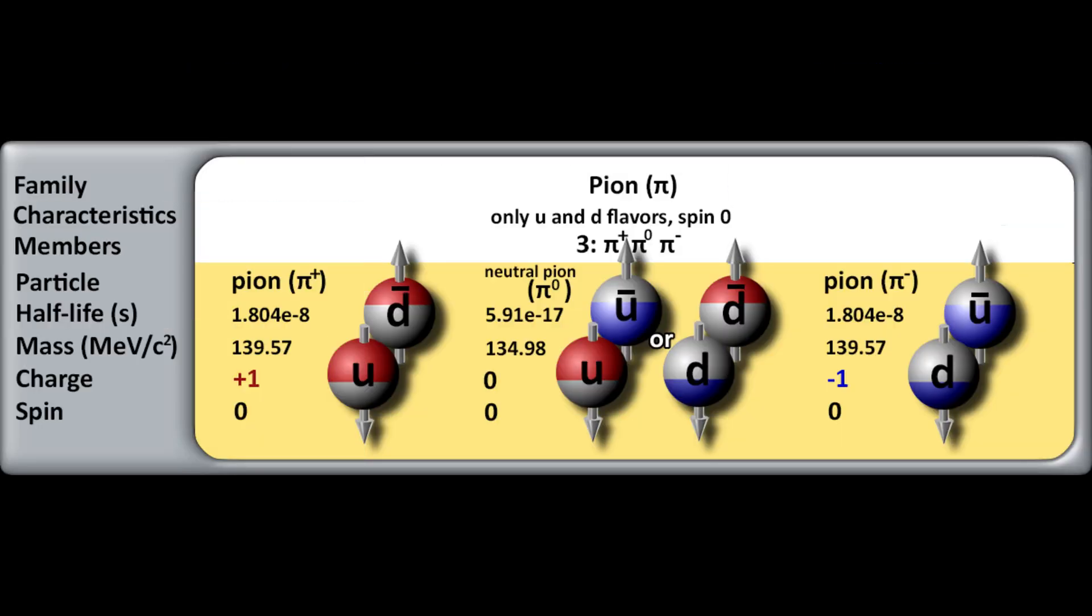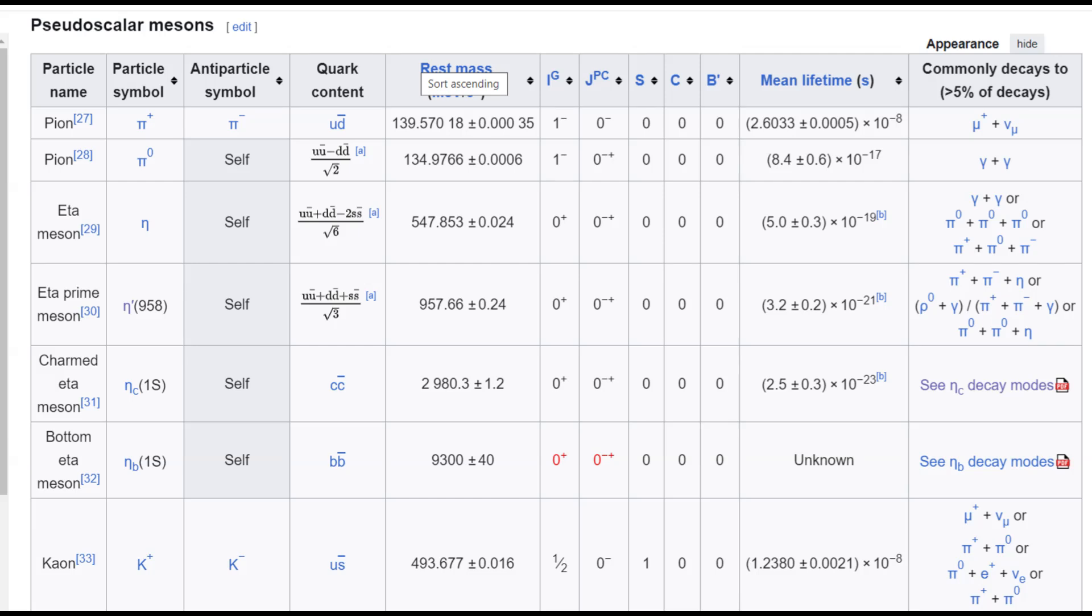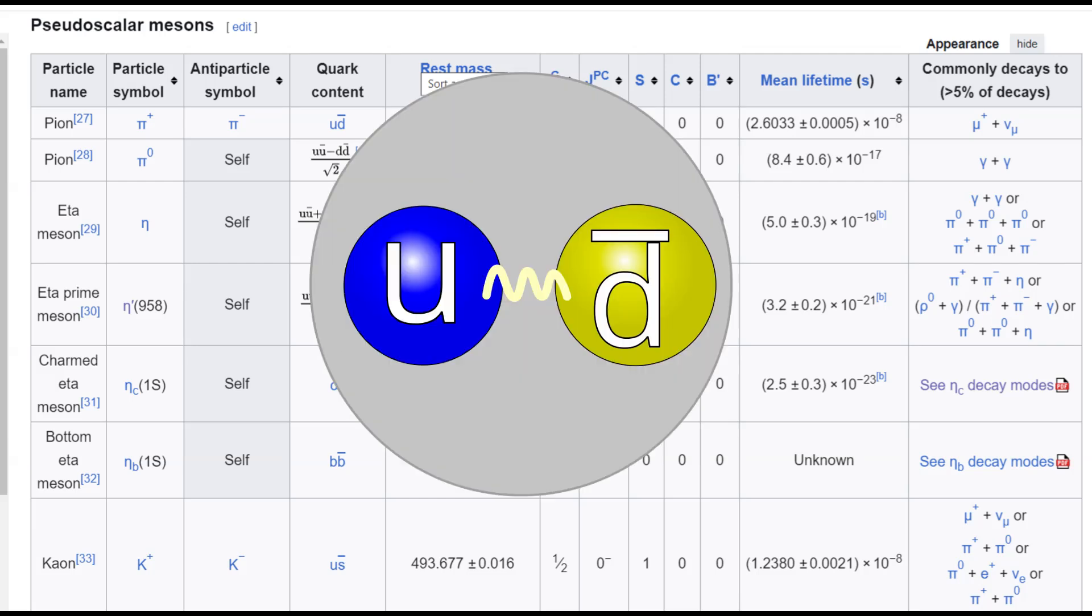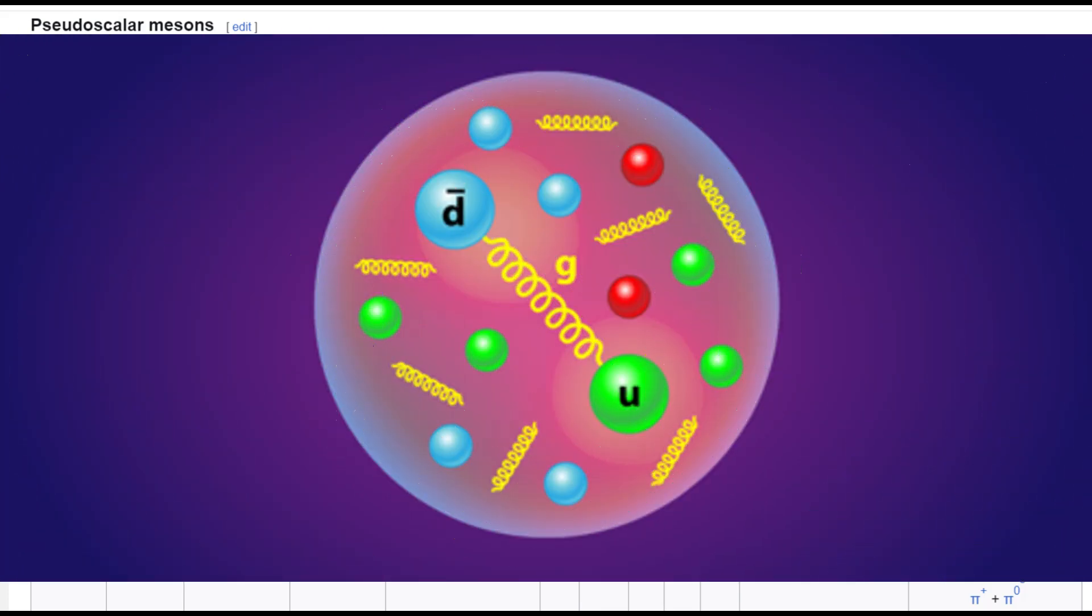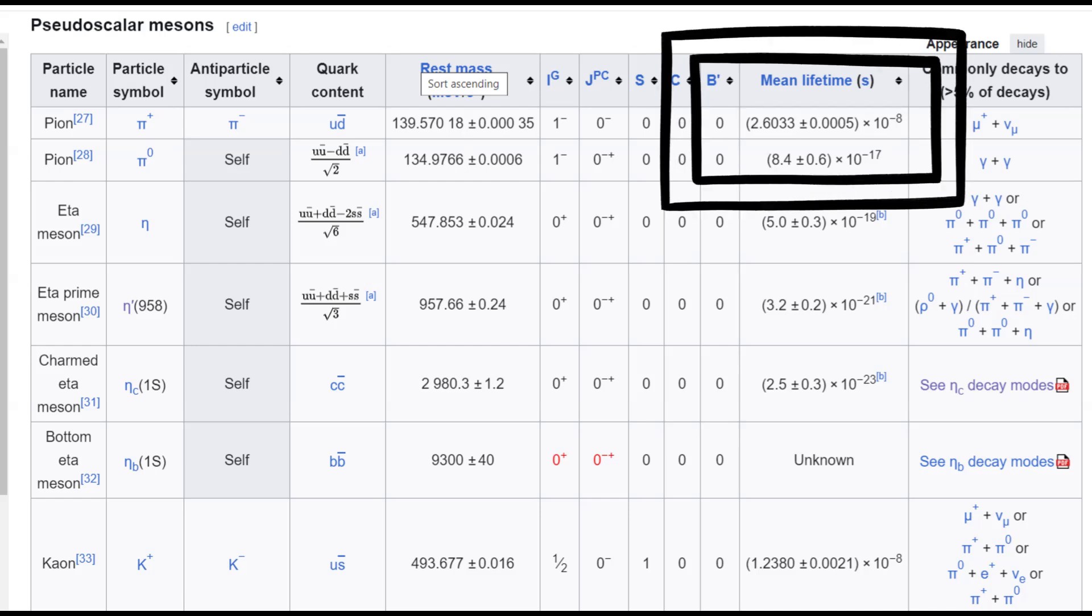There are two charged pions and a neutral pion. The positively charged pion, pi plus, is made up of a u quark and an anti-d quark or u d bar and it has a mean lifetime of about 10 to the power minus 8 seconds.